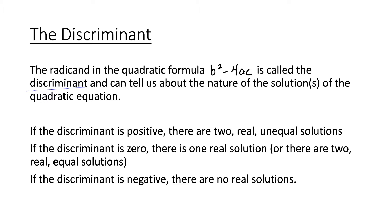If the discriminant is positive, there are two real unequal solutions. If the discriminant is equal to zero, there's one real solution, which you can also think of as two real equal solutions. If the discriminant is negative, there are no real solutions.